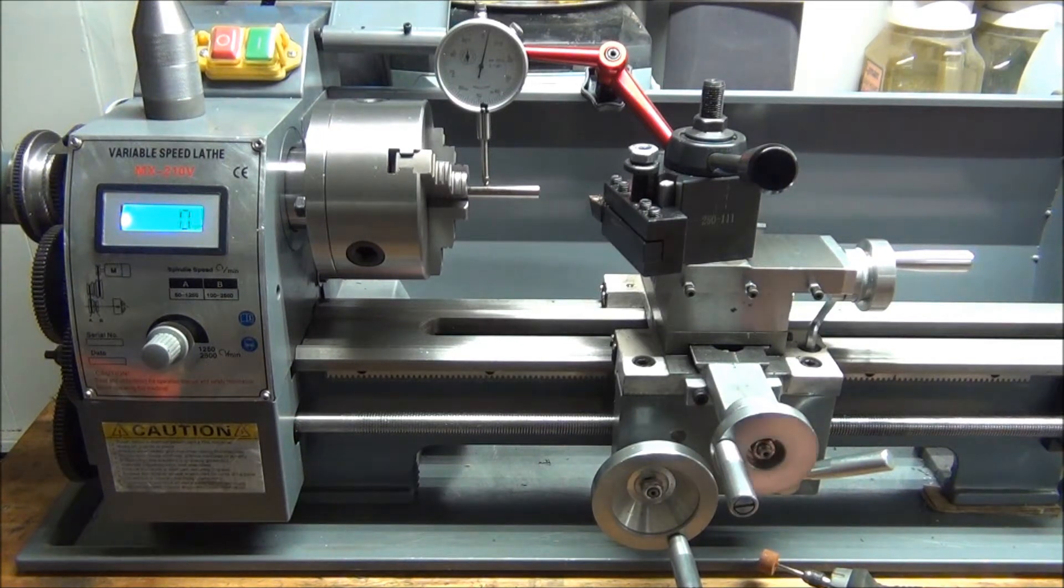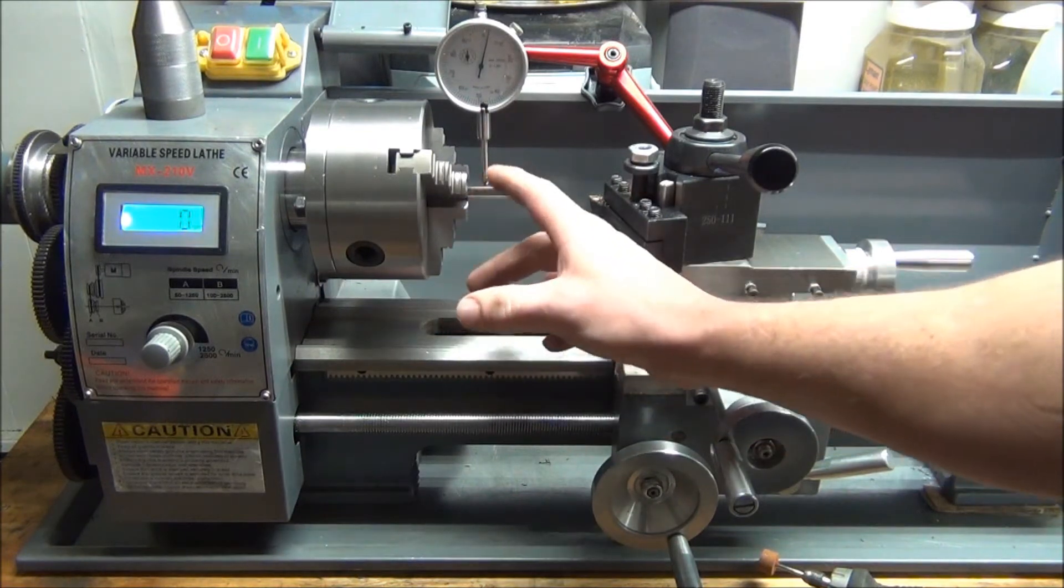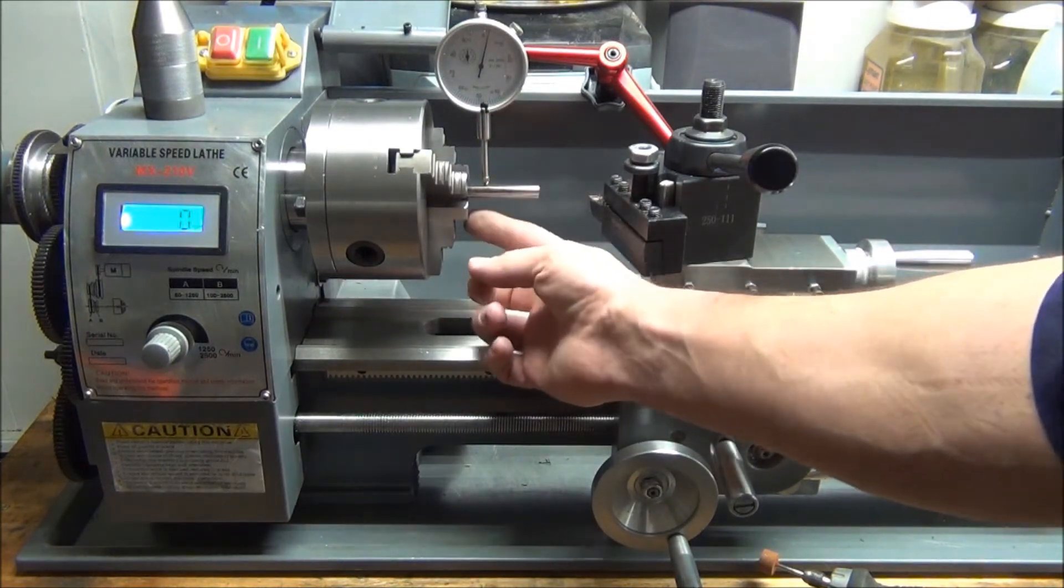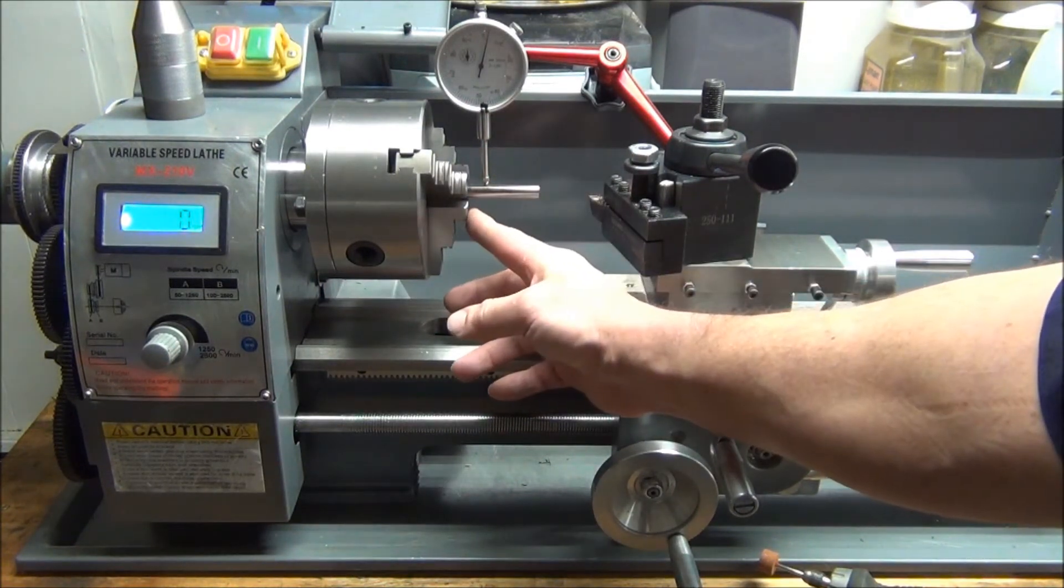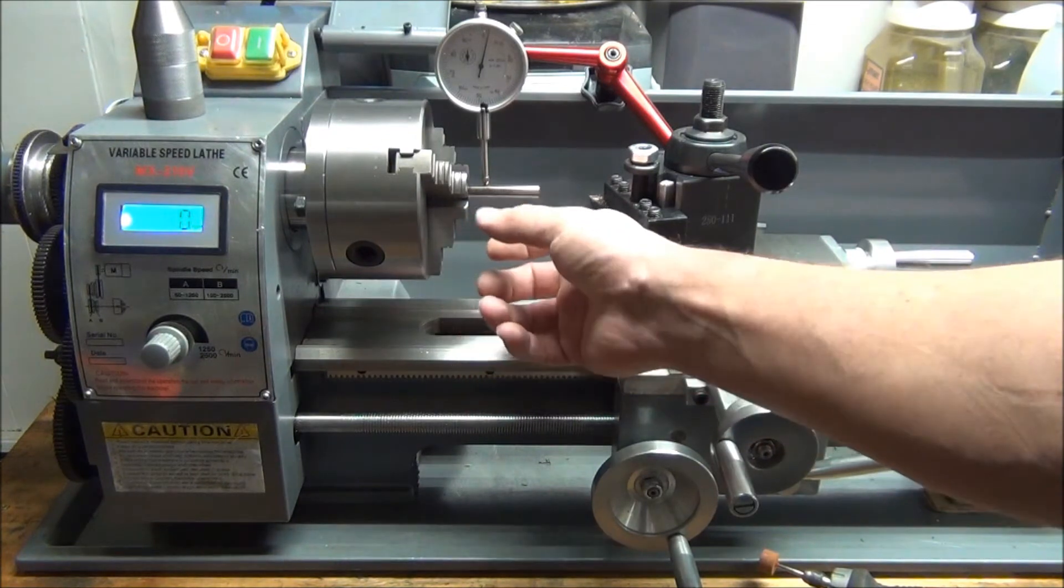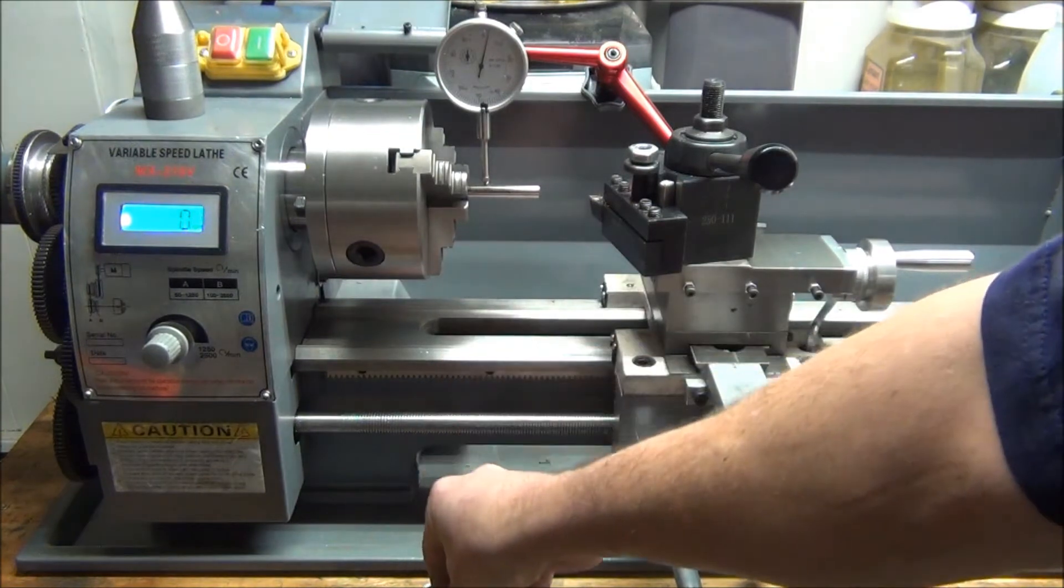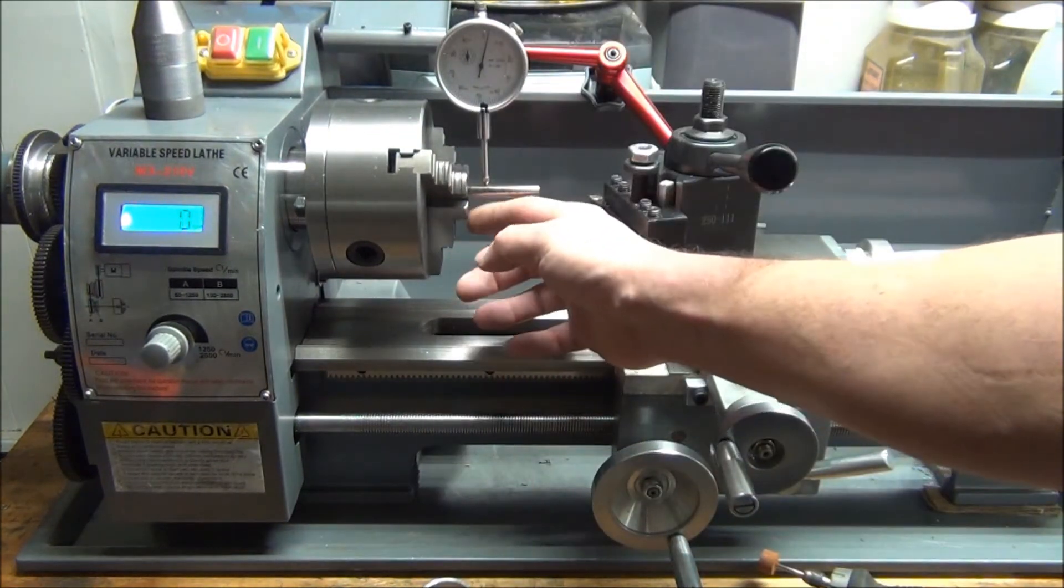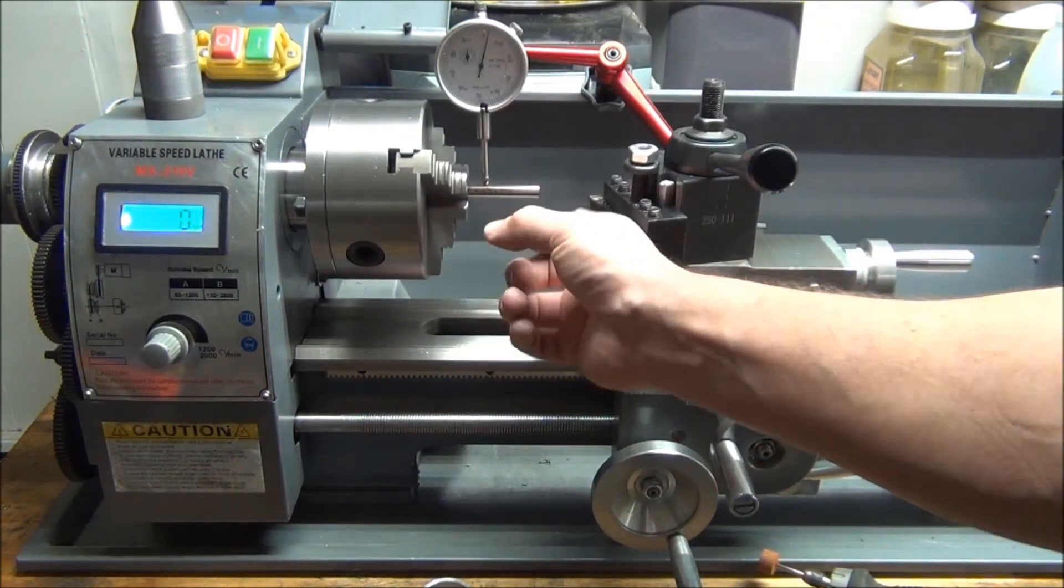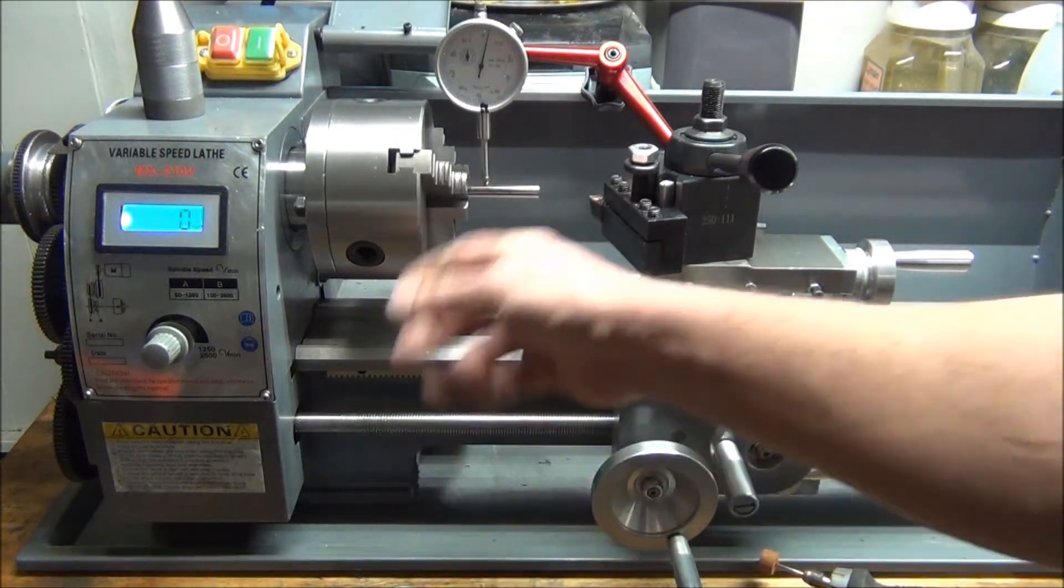What I ended up doing was treating this like a four-jaw. I would spin it around, find the high spot, and say 'Okay, here's the jaw that's causing my issues.' I would take this back out, put my piece of aluminum back in there, clamp it back down, and then just work on that one jaw. I would take a little bit off, pull my spacer back out, put the pin back in, and check it again.